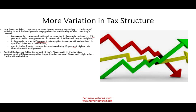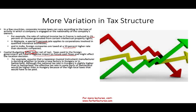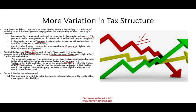In capital budgeting, what matters is the after-tax return — how much am I going to get after I pay my taxes? Taxes paid to a foreign government will have a negative impact on future cash flow and might affect the location decision. For example, a Japanese musical instrument manufacturer deciding whether to locate a factory in Hungary or Switzerland: although Hungary's national tax rate of 9% is slightly higher than Switzerland's 8.5%, the effective rate in parts of Switzerland is much higher once local taxes are added.